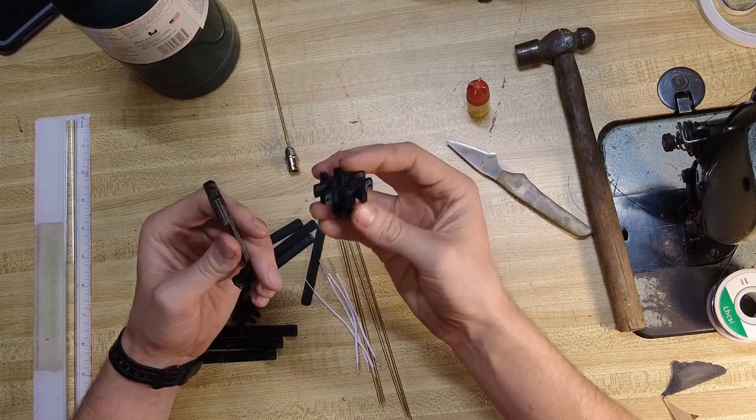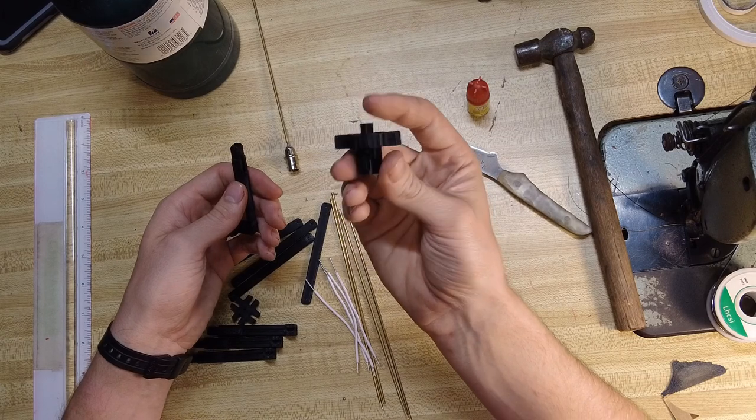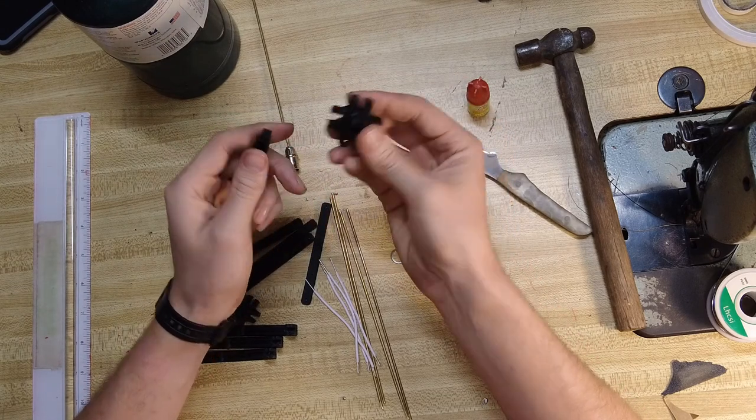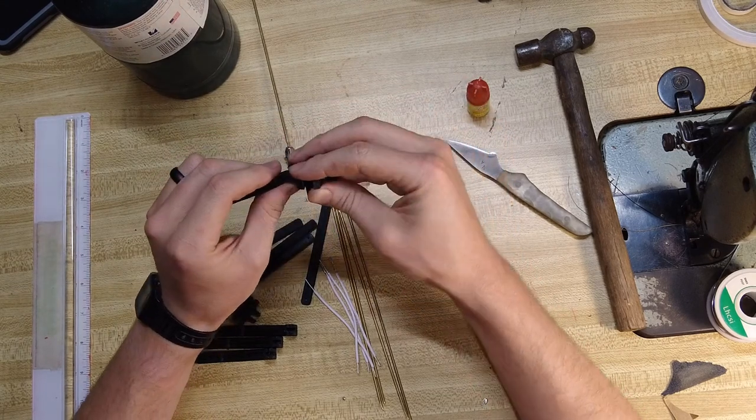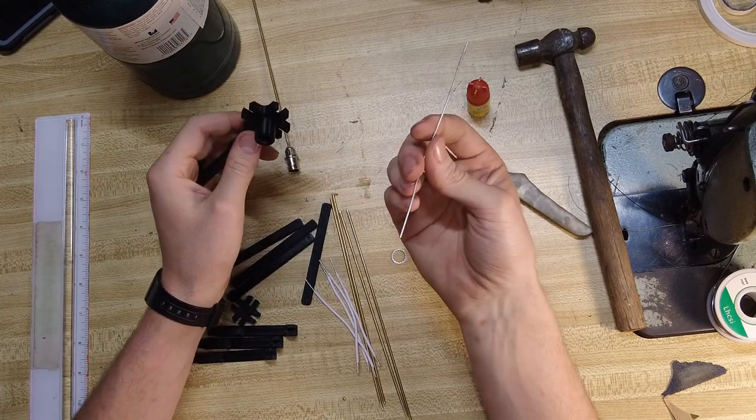Next we can assemble the body of the antenna. We're going to take our parts and take our bottom hub here and the fatter of the two types of arms. What I do is just match up the holes and then we can just put a piece of this wire through.